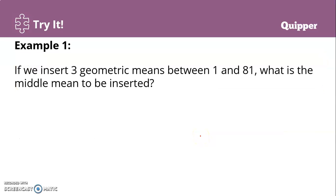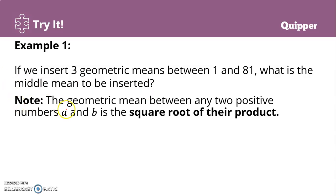Let's have an example: if we insert three geometric means between 1 and 81, what is the middle mean to be inserted? Take note that the geometric mean between any two positive numbers a and b is the square root of their product, that is the square root of a times b.